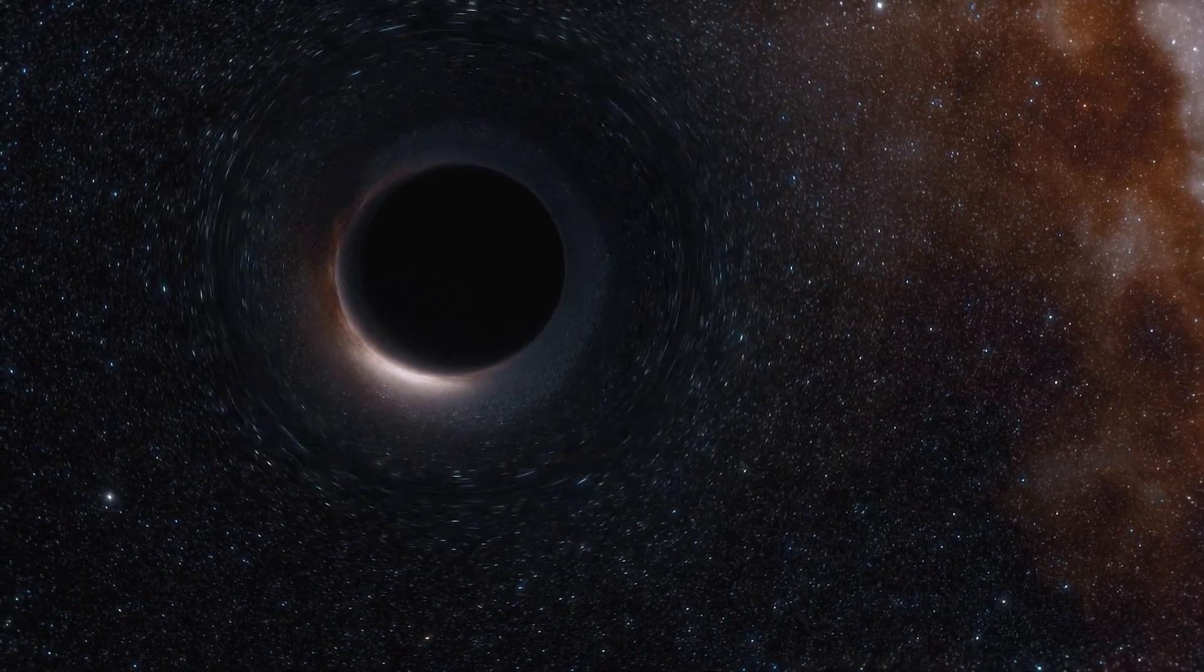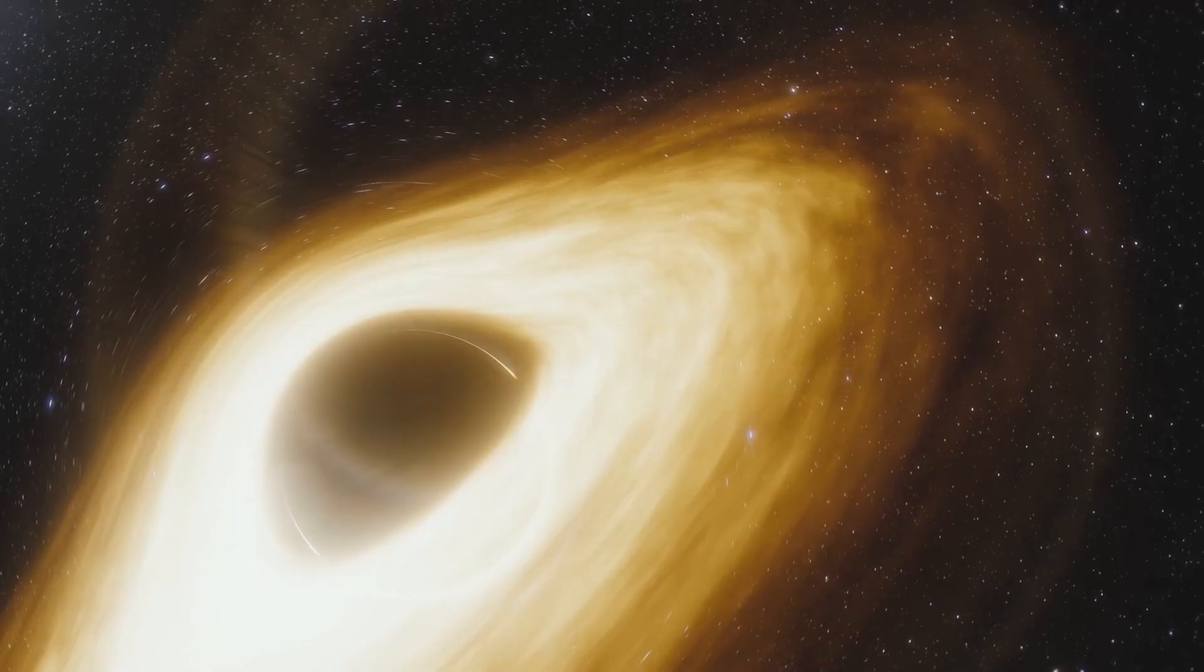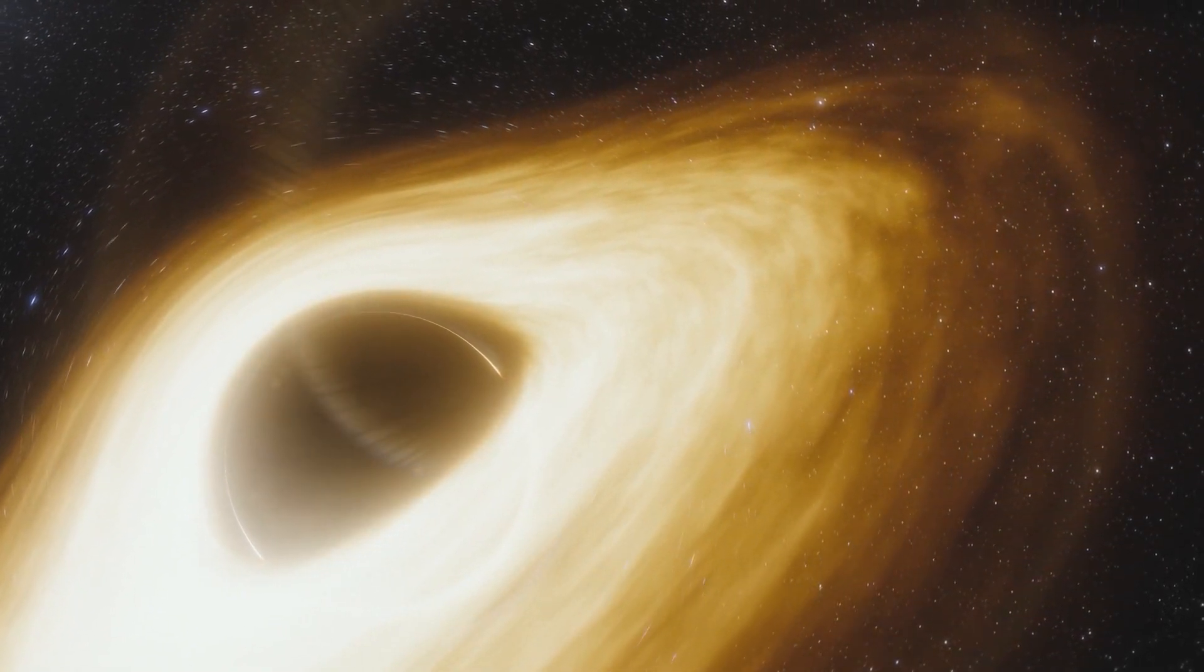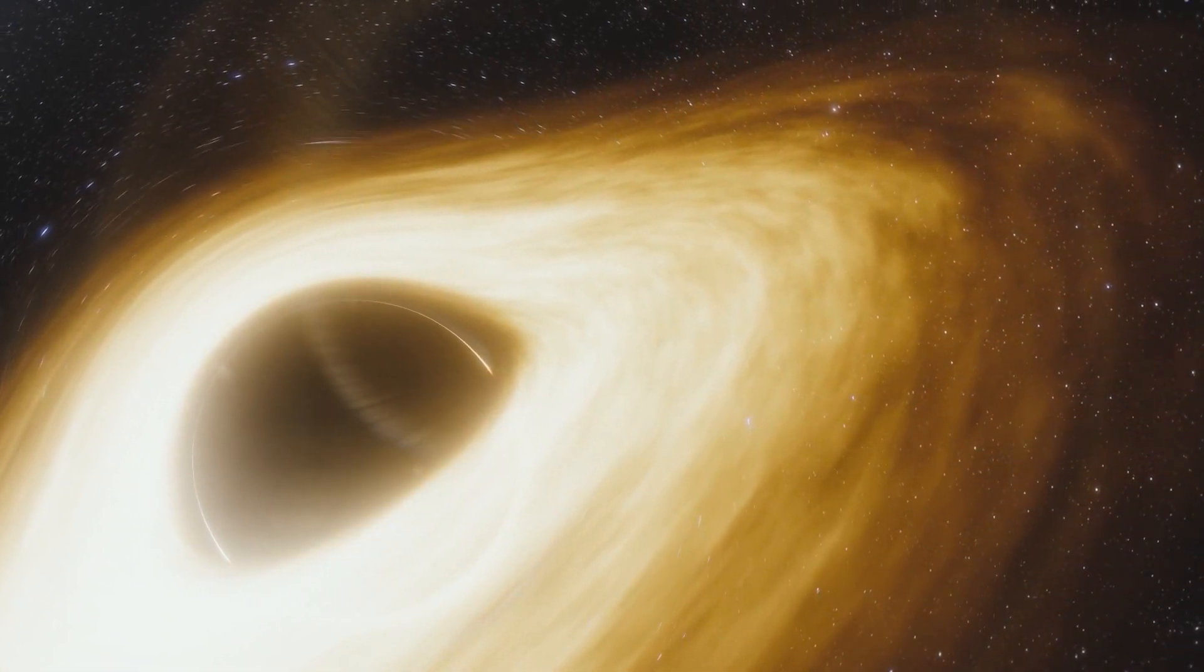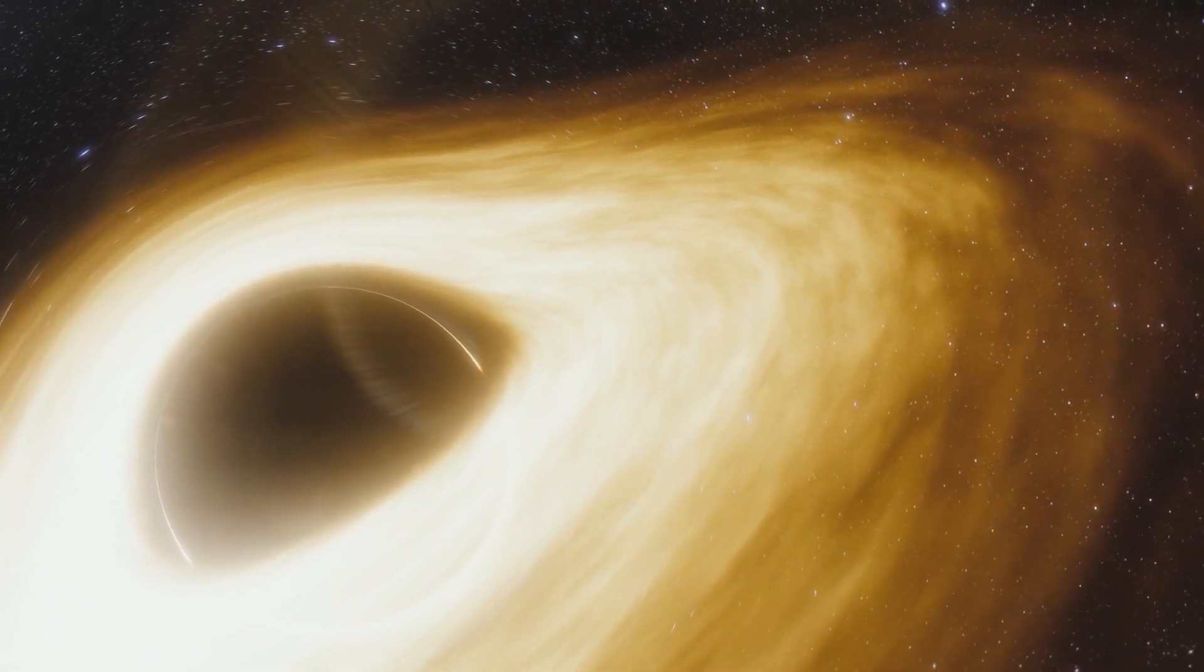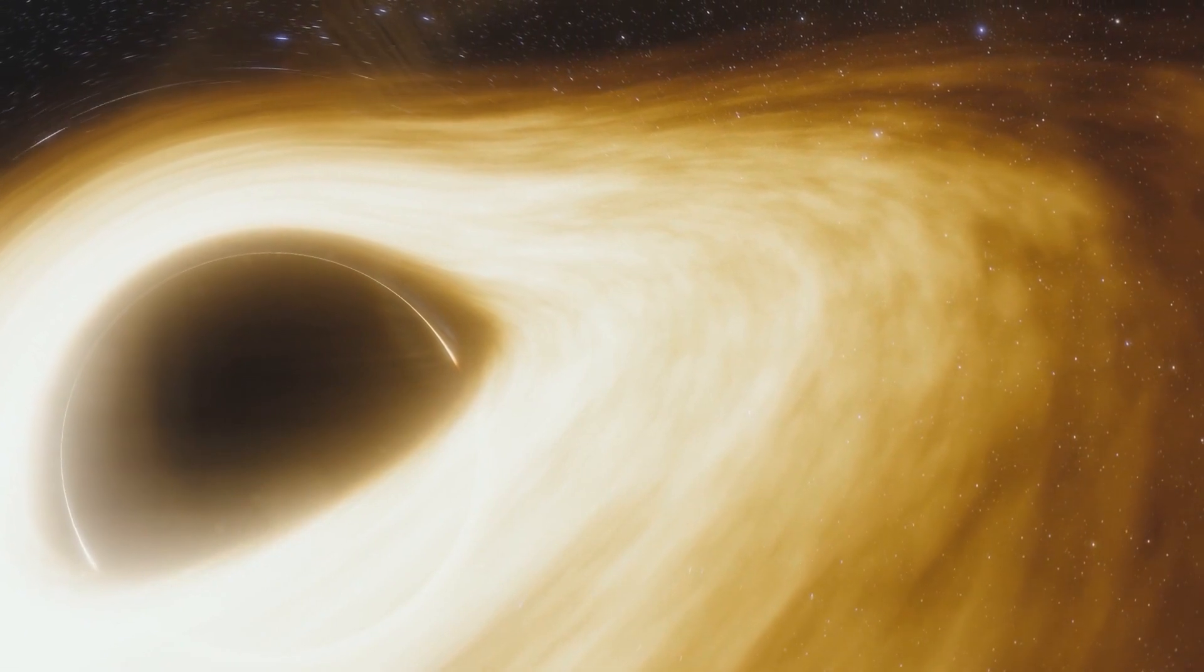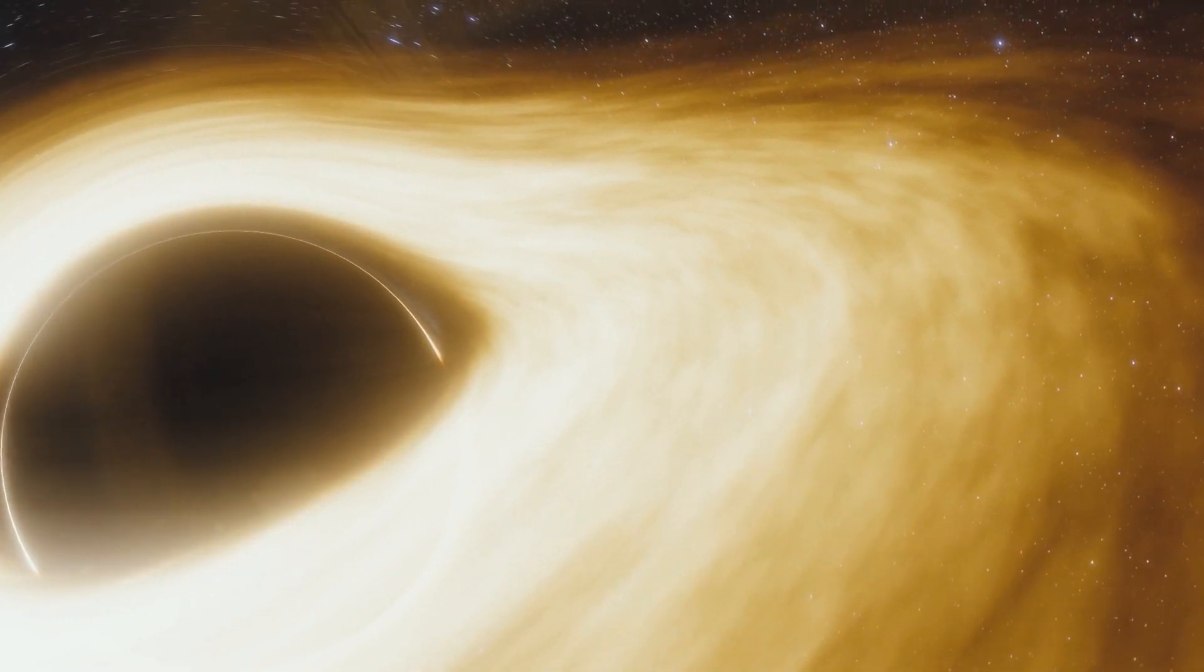That is except for one black hole in particular, one so small and so close to Earth, its origin and order in the Milky Way Galaxy has baffled astronomers since the announcement of its discovery in 2021. Thus, the unicorn was introduced, the smallest black hole in the recorded history of space.